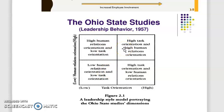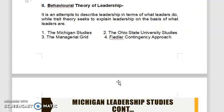These four quadrants are what the Ohio State model discusses. The model is simple to understand and practice, and the logic behind it appears quite reasonable and appealing. The concepts of consideration and initiating structure have had great appeal to practicing managers, who can use it to see where they need to position themselves to get work done by employees.